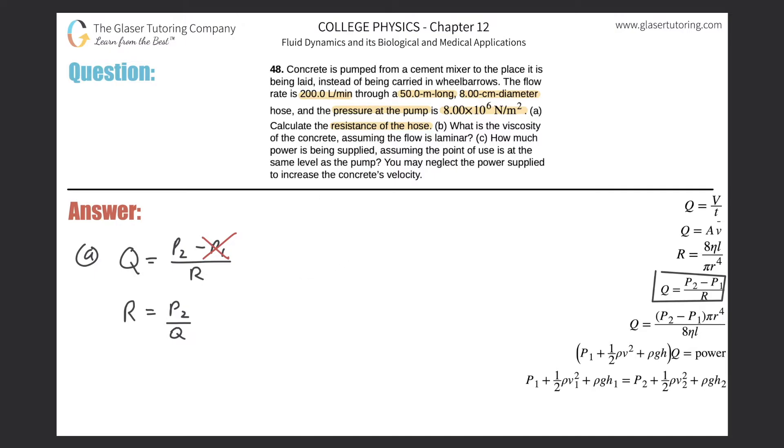All right, so the resistance here is going to be equal to that pressure of 8.00×10⁶ divided then by the flow rate. But the flow rate, look, you know it has liters per minute, so we got to do that conversion. So basically this will be 200, multiplied then by one over 1000 because there's a thousand liters in one cubic meter. And then we have to get rid of the minutes and convert that into seconds, so it's one minute over 60 seconds. So this is the conversion.